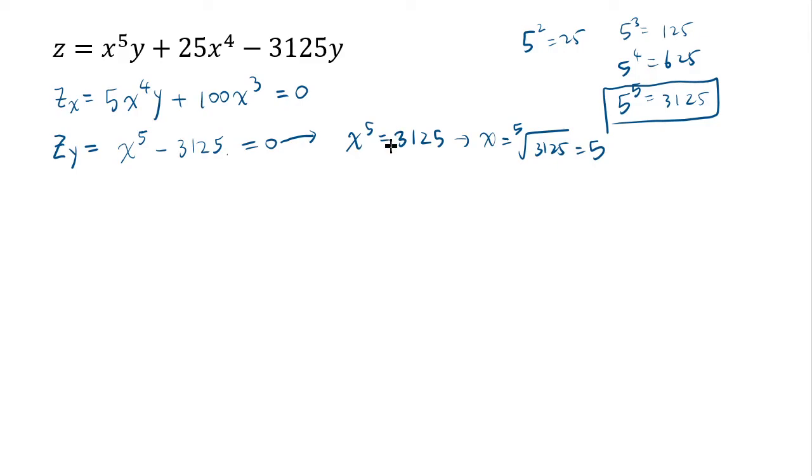And once you get the value of x, then you should plug into this one to see what it means. So after you get x equals 5, x equal to 5 is the only thing that will make the y derivative as 0. So you plug that in here and you get 5 times 5 to the 4th y plus 100 times 5 to the 3rd equal to 0.